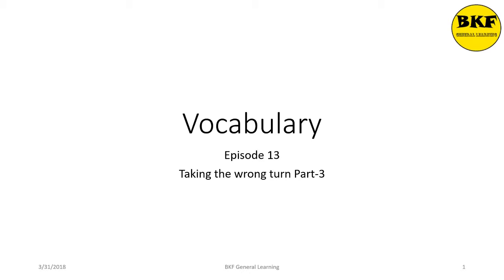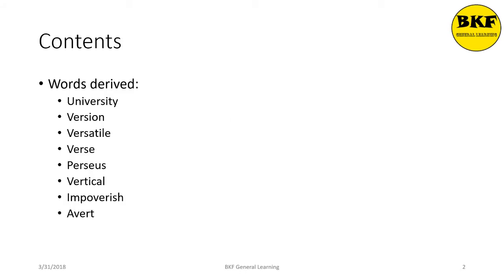Hi guys, welcome back to vocabulary. This is episode 13, 'Taking the Wrong Turn, Part 3.' In this session as well, we are going to continue with the root word 'vers' and these are the words which we are going to discuss: university, version, versatile, verse, Perseus, vertical, impoverish, and avert. So let's start.